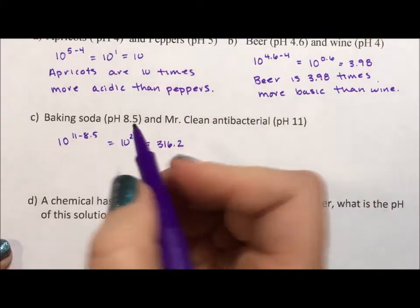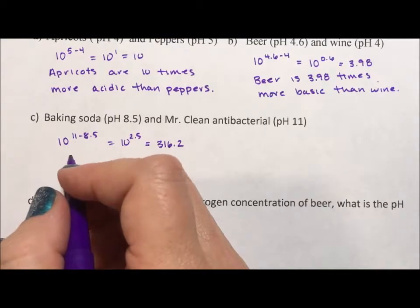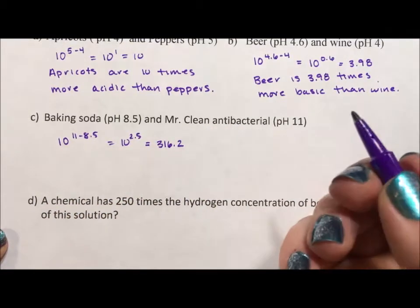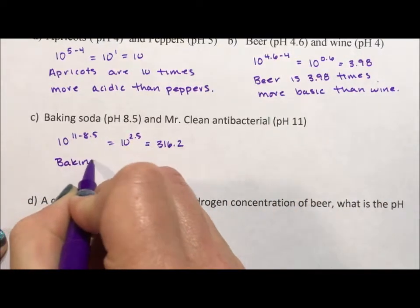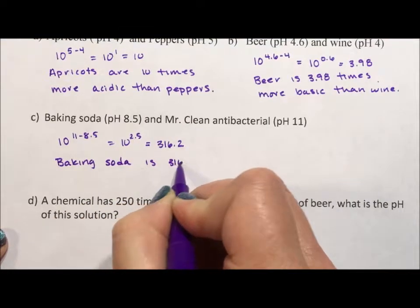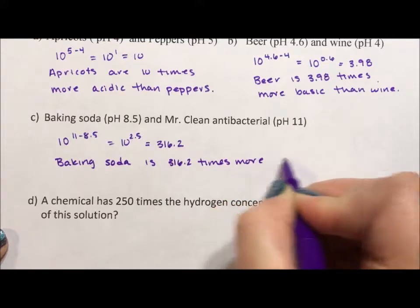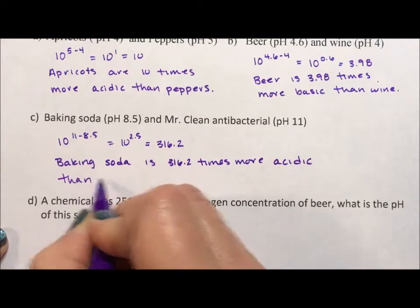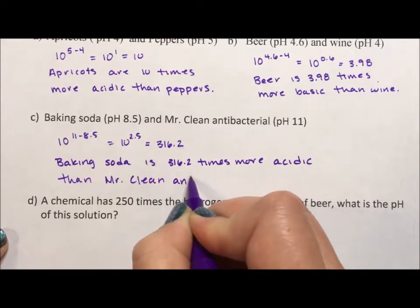And so this is kind of fun because baking soda is considered a very basic base but compared to an antibacterial we can say baking soda is 316.2 times more acidic. We don't think of it as an acid but it's kind of fun to say it's more acidic than Mr. Clean antibacterial.